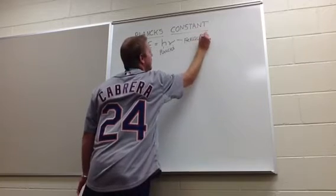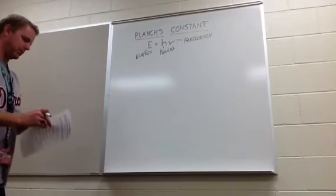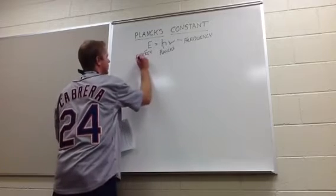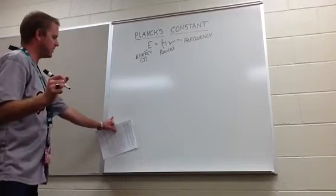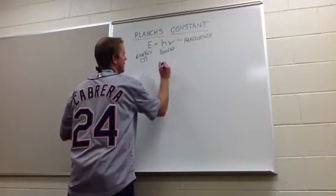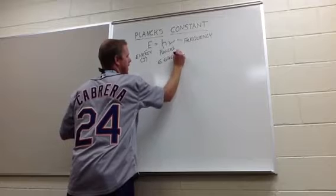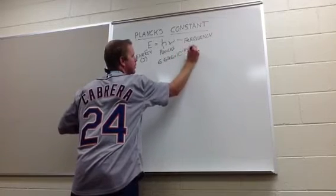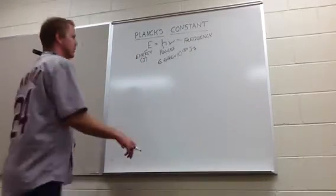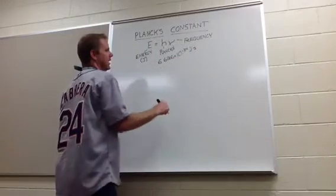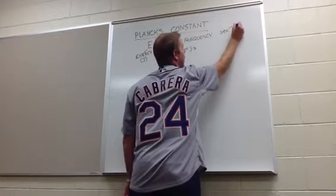Let's talk about the various units we're going to find here. Energy is going to be measured in joules. Which brings us to Planck's Constant. Planck's Constant is this number: 6.626 times 10 to the negative 34 joule-seconds. That's a nasty unit. And frequency is seconds to the negative one, or hertz.